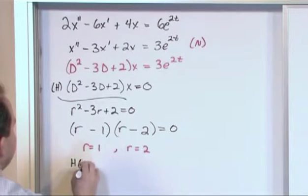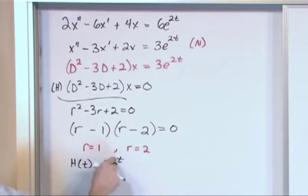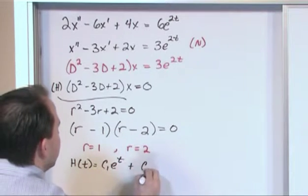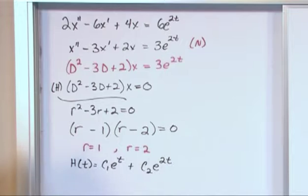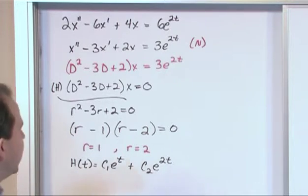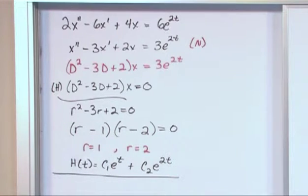So we just say h of t equals c1 e to the t coming from here plus c2 e to the 2t, this 2 coming from here. So we have the homogeneous equation written. This is basically half the solution right here. We've basically done half the solution.